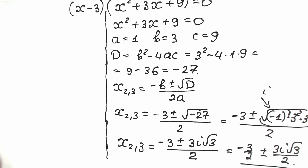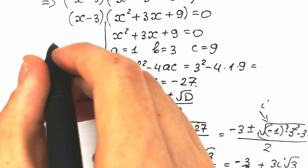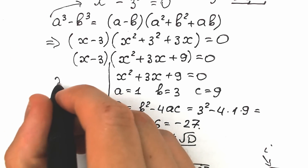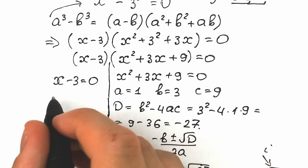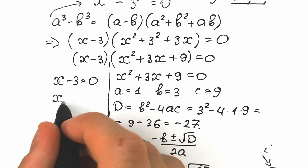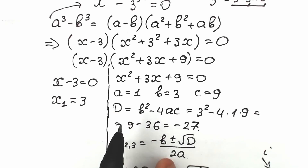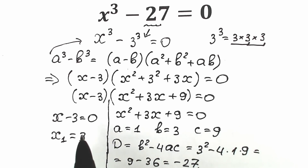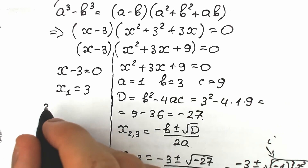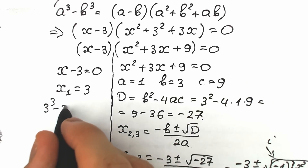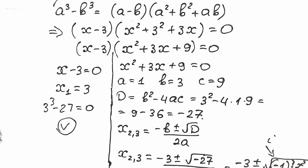Now for the real root: from (x minus 3) equals 0, we get x₁ equals 3. This is the well-known answer because 3 cubed minus 27 equals 27 minus 27 equals 0, which is absolutely correct.